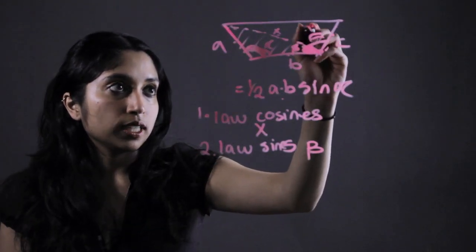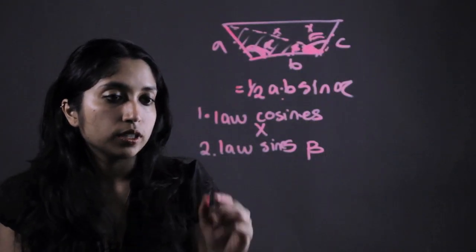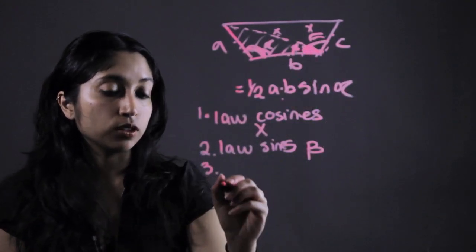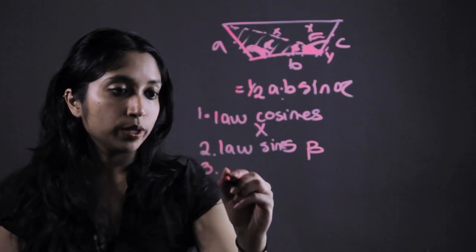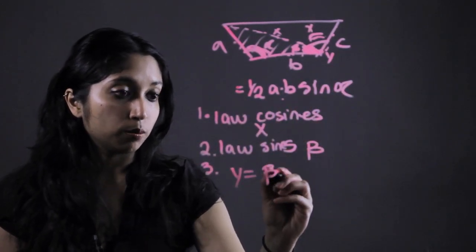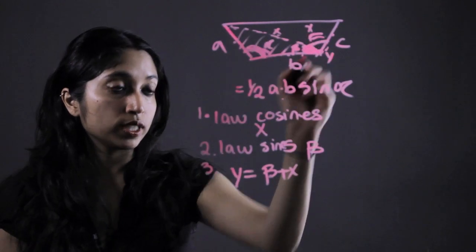And then let's just call this guy X, this angle that we're looking for. Because we already know the value of this larger angle, just call that Y. We can write Y equals what we solve for beta plus X. We can then solve for this angle X.